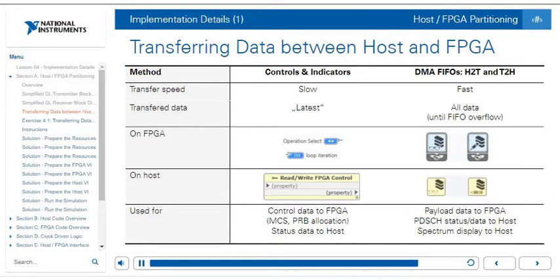In summary, there are two ways to pass data between the host and the FPGA. There is a slow method to pass the latest data in either direction, and a fast method that streams data between the FPGA and the host. As you design your code, you need to consider whether you need to stream all data or whether periodic updates are sufficient.